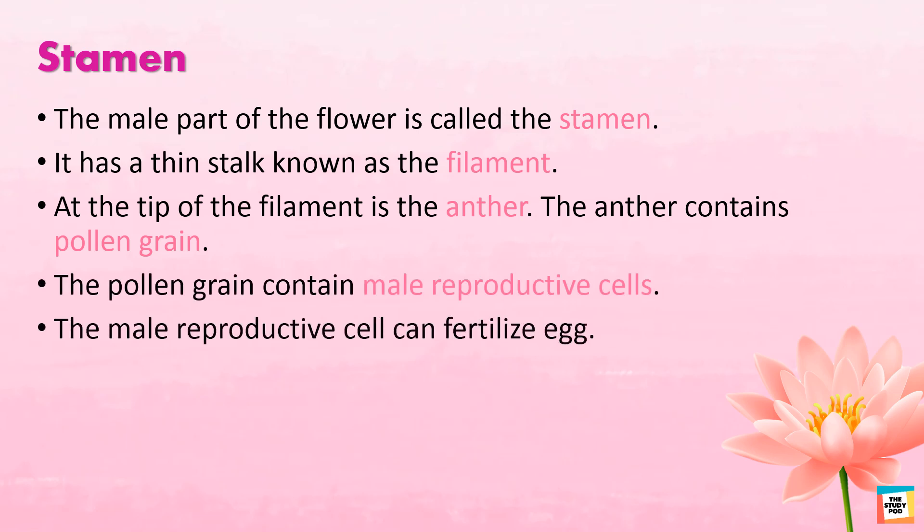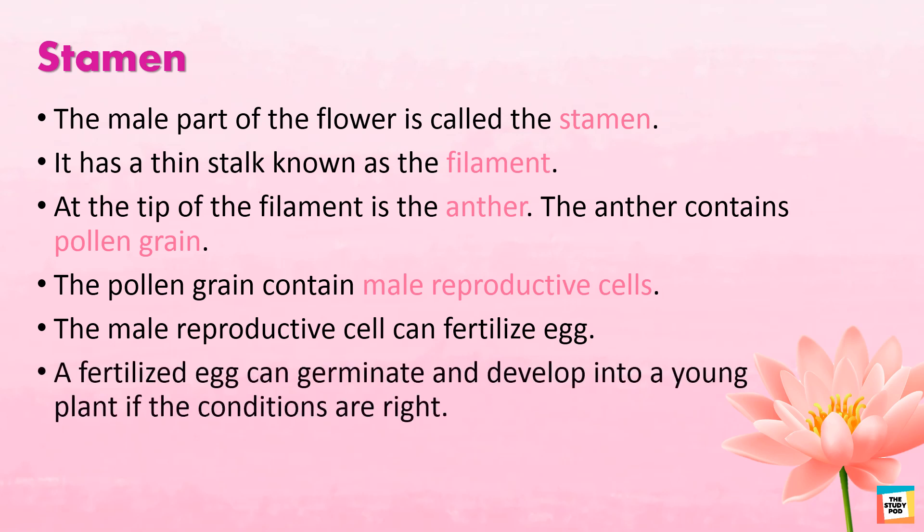The male reproductive cell can fertilize an egg. A fertilized egg can germinate and develop into a young plant if the conditions are right.